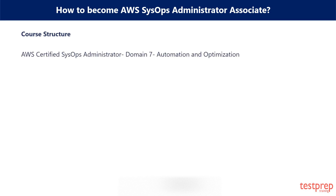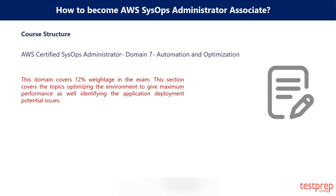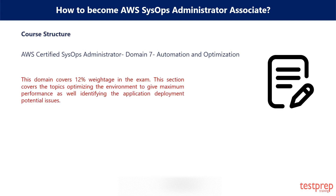Domain 7: Automation and Optimization. This domain covers 12% weightage in the exam. This section covers topics on optimizing the environment to give maximum performance, as well as identifying application deployment potential issues.